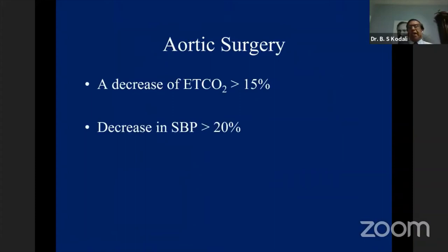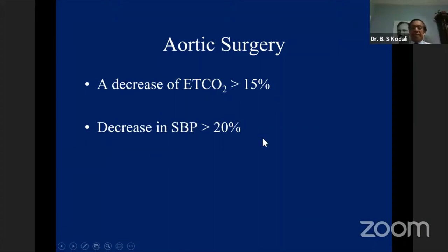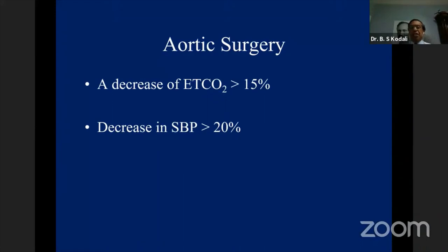In aortic surgery, during cross-clamping, if the end-tidal CO2 decreases more than 15% from baseline, it indicates that when they unclamp, the systolic blood pressure drop could be greater than 20%. A decrease in end-tidal CO2 during cross-clamping shows that collateral circulation is insufficient, making this patient likely to have more hypotension on unclamping. This gives you an indication even before unclamping to be prepared with volume and vasopressors.